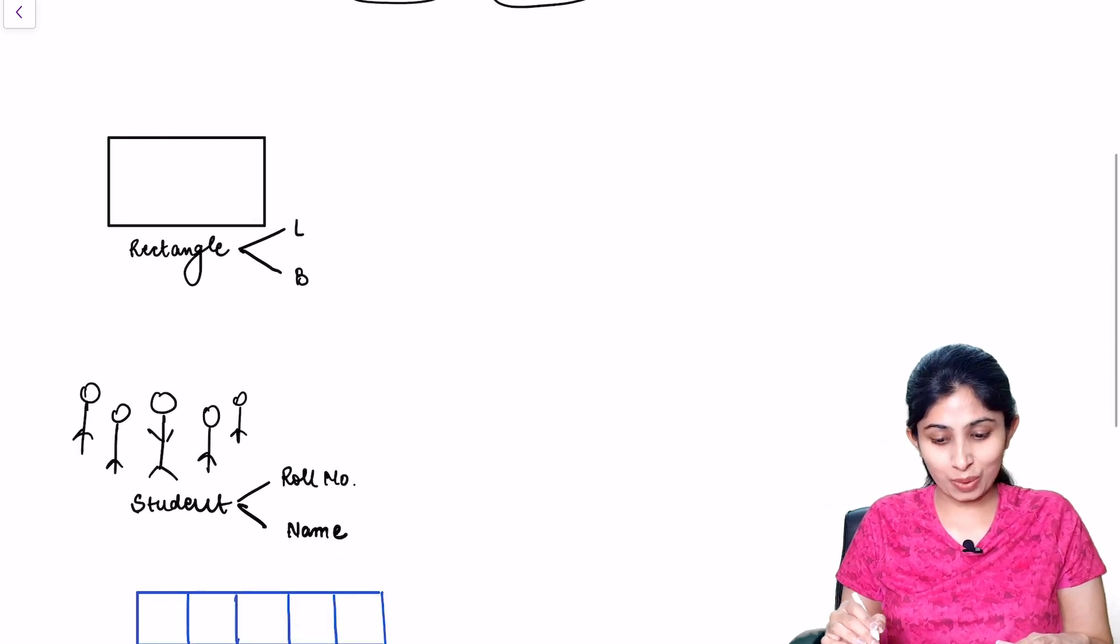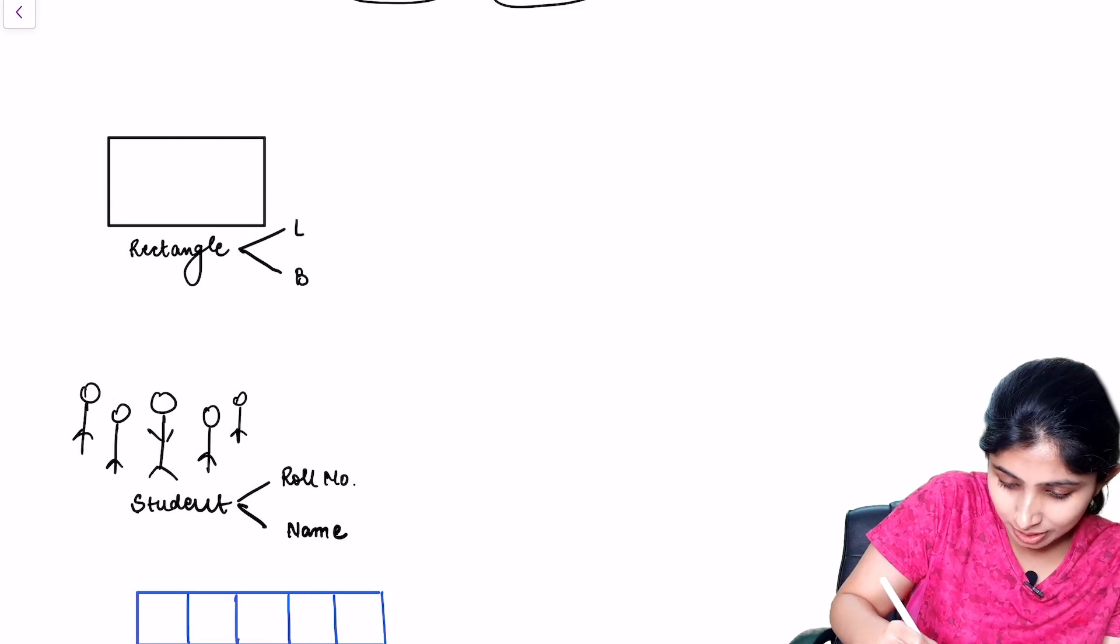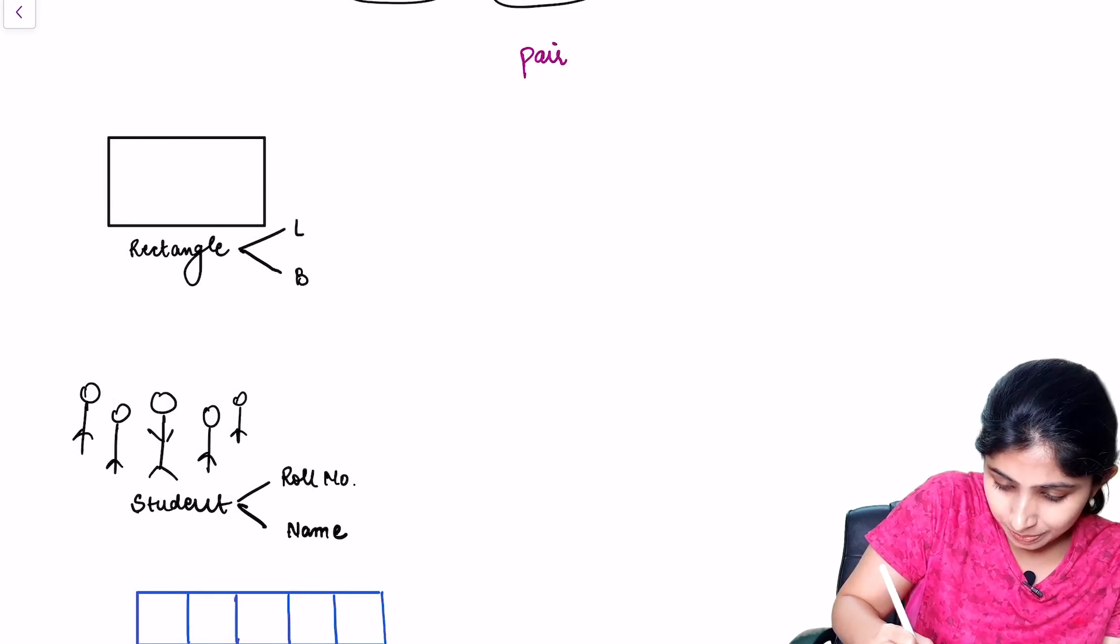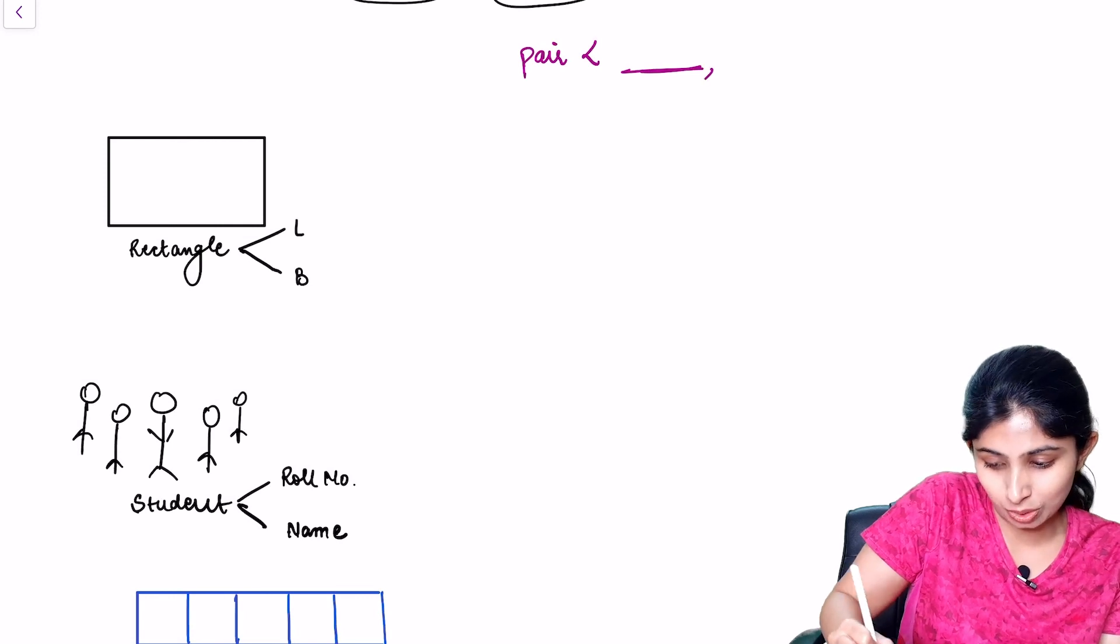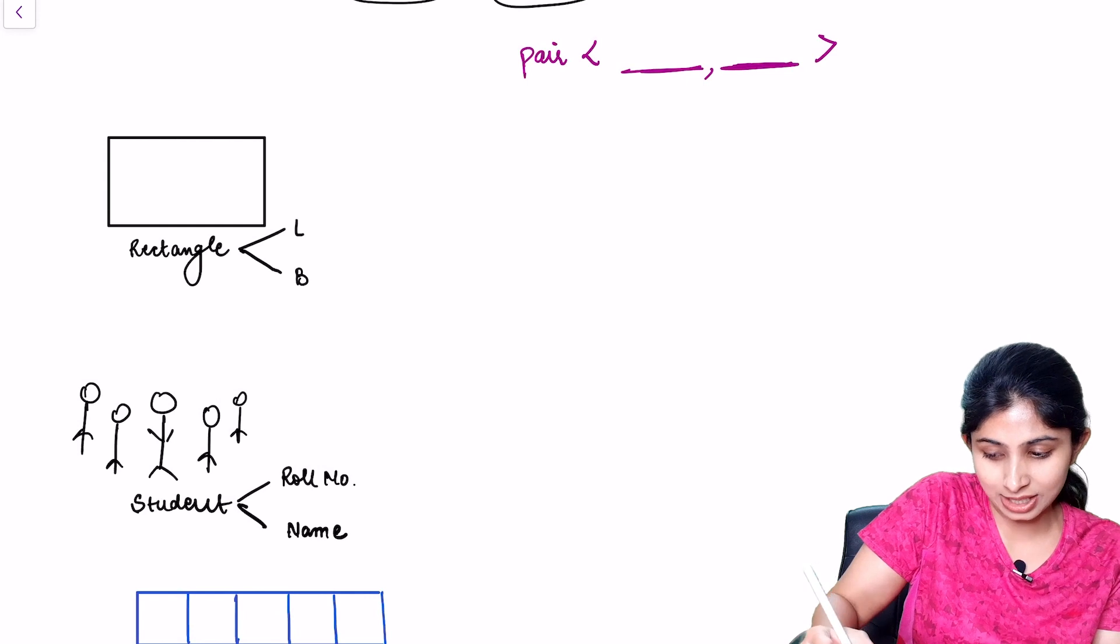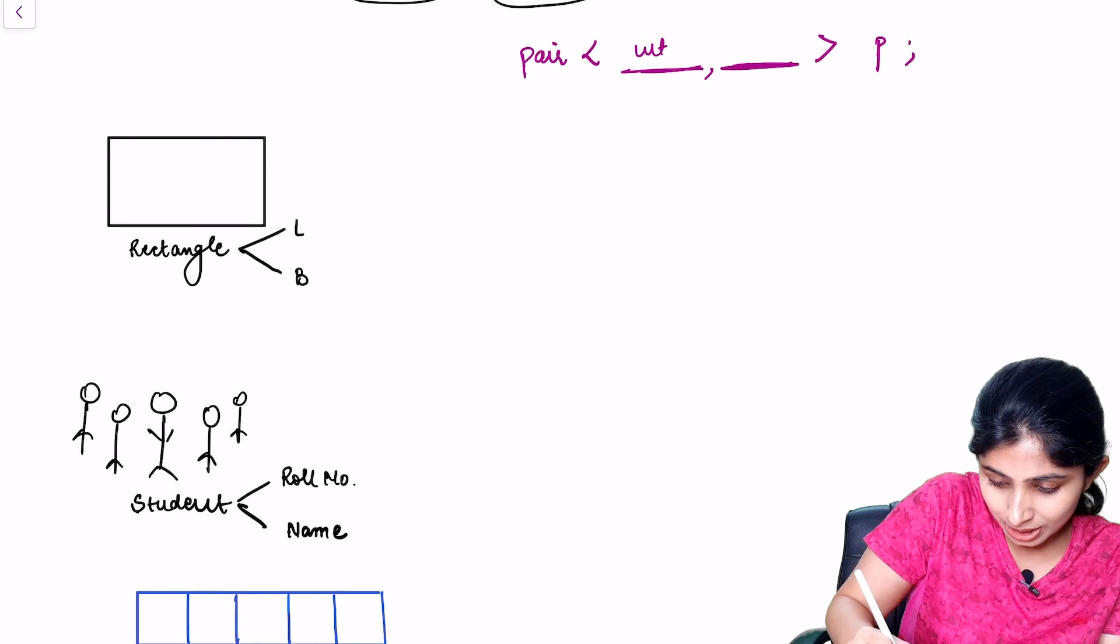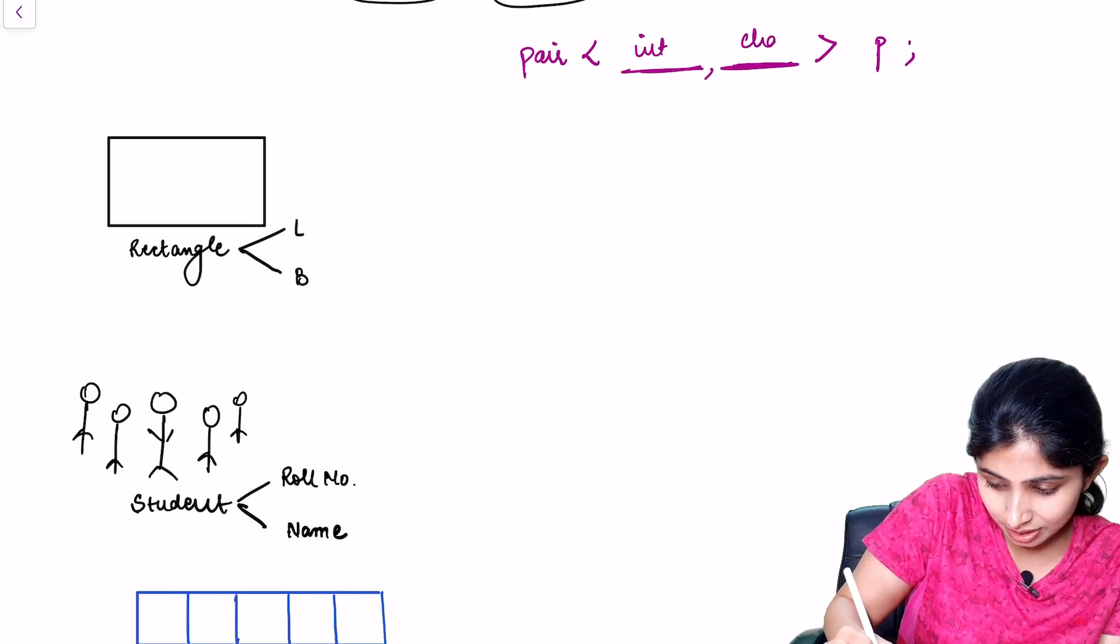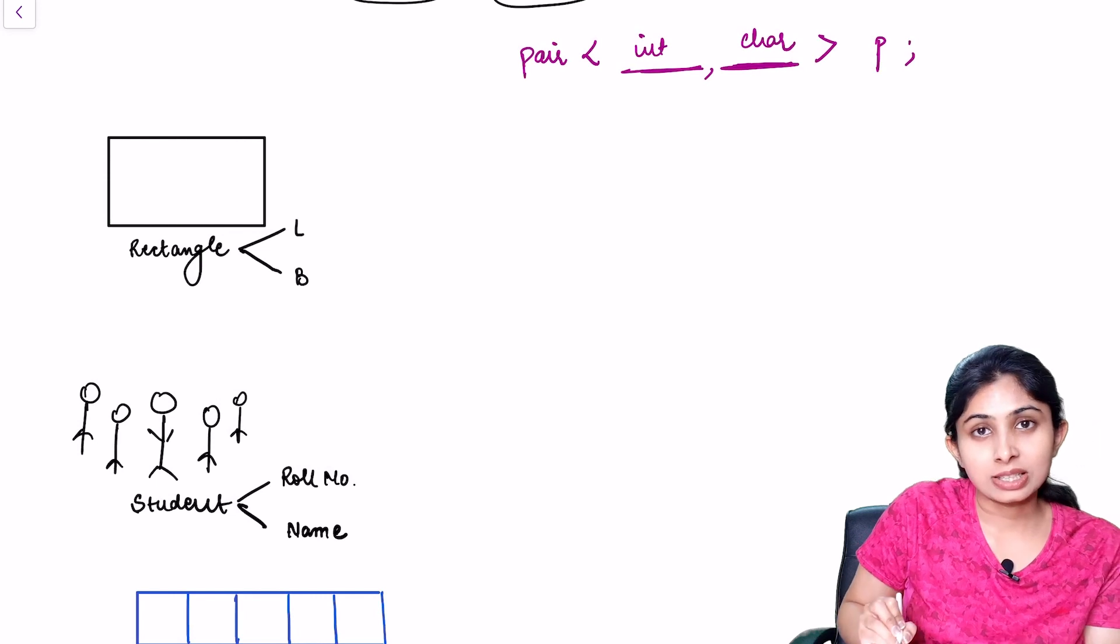Now let's see how we can define a STL pair. We can write pair, the data type of the first element that we want to store, comma, the data type of the second element in angular brackets and the identifier of our pair. For example, let's take int and character. So our pair is defined.